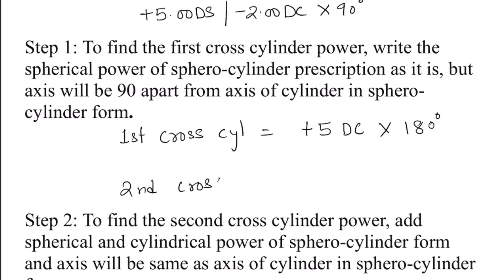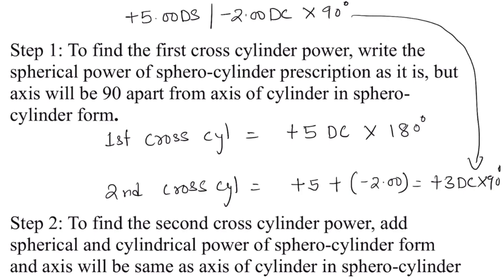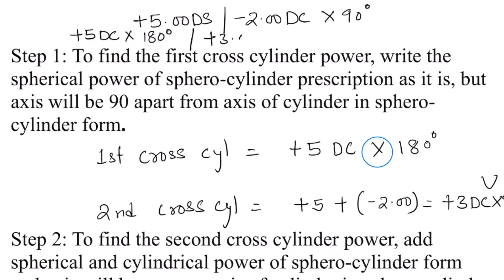To find the second cross cylinder, we have to add the spherical power to the cylindrical power, and the axis will be the same as the sphero-cylinder cylindrical axis. In our case, spherical power is plus 5 and cylindrical is minus 2, so the total will be plus 3 diopter cylinder at axis 90 degrees. When you write the final prescription, you write: plus 5 diopter cylinder axis 180 degrees, slash, plus 3 diopter cylinder axis 90 degrees.